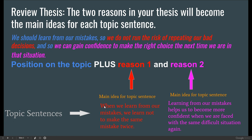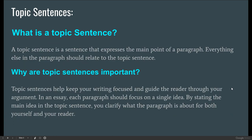Here is what topic sentence number one would look like: When we learn from our mistakes, we learn not to make the same mistake twice — which is exactly what this says in red. Topic sentence number two: learning from our mistakes helps us to become more confident when we are faced with the same difficult situation again. We could maybe take out the word 'same' and 'again' because they're repeating. So in my thesis, I'm taking my reasons and making them into topic sentences.